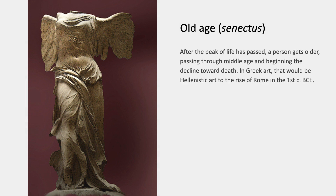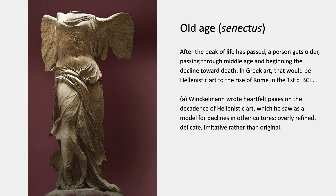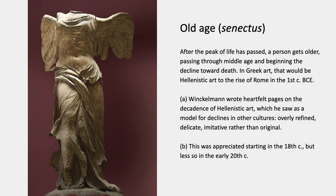Last comes old age — senectus. After the peak of life has passed, a person or an art gets older, passing through middle age and beginning a decline toward death. In Greek art, that would be Hellenistic art up to the rise of Rome in the first century BCE. Winckelmann wrote some very heartfelt pages on the decadence of Hellenistic art because he thought of it as a model for the decline of other cultures. He thought it was overly refined, delicate, and imitative rather than original. This art was actually appreciated during the 18th century but less so in the early 20th century. And that, of course, is the Nike of Samothrace in the Louvre.